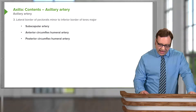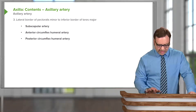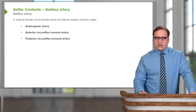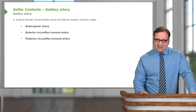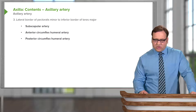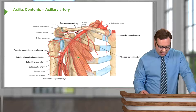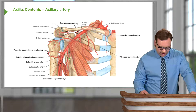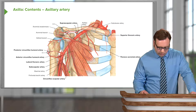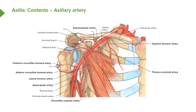Within the axilla, the third part of the axillary artery gives rise to three blood vessels: the subscapular artery, and the anterior and posterior circumflex humeral arteries. We can see the subscapular artery running down in this direction, and it may well go on to form various anastomoses around the scapula. We can also see it anastomosing with a branch coming off the thoracoacromial artery — a complicated anastomosis, which we will come back to.